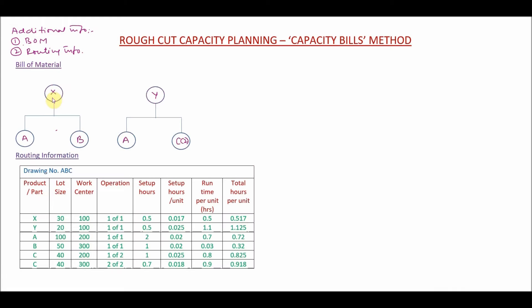In order to understand the capacity bills method, let's take a simple bill of material and routing for two products X and Y. This is the bill of material for X and this is the bill of material for Y. X is made up of one unit of A and one unit of B, whereas Y is made up of one unit of A and two units of C.